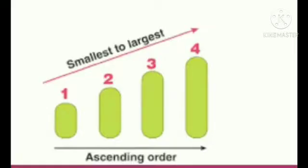As you can see here in this picture, we have arranged numbers from 1, 2, 3, 4 — which means smallest to largest number. This means ascending order.